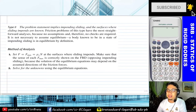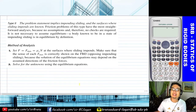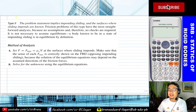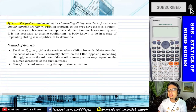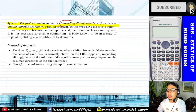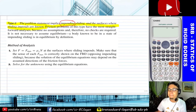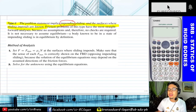Let's proceed with Type 2 — this is the most straightforward analysis and the most common type of problem we solve. Type 2: the problem statement implies impending sliding and the surfaces where sliding impends are known. Again, the word 'impending' will be specified in the problem. Friction problems of this type have the most straightforward analysis because no assumption and therefore no checks are required.